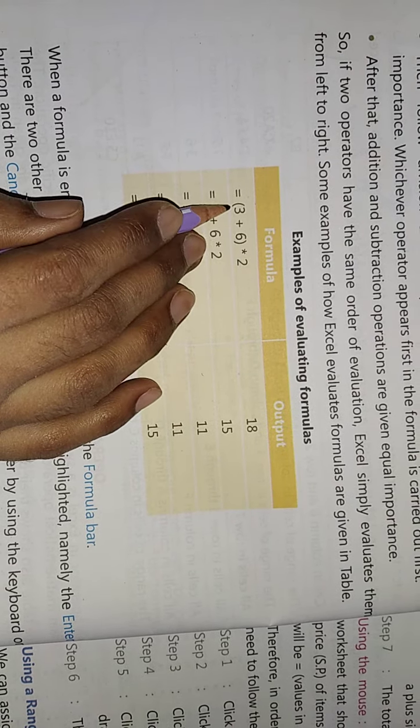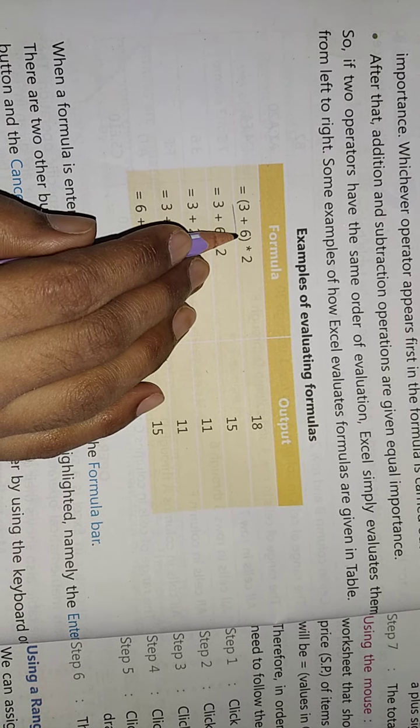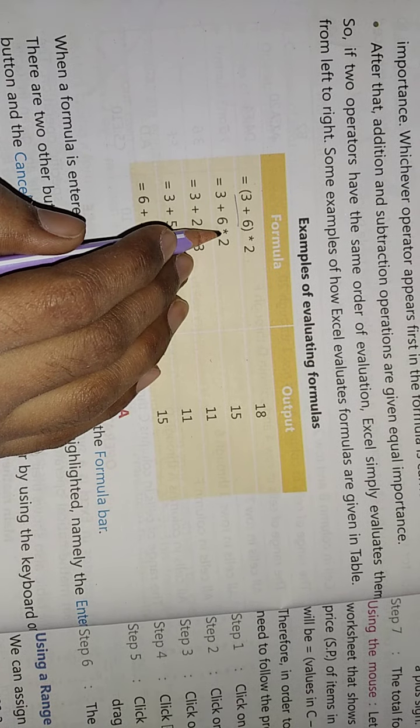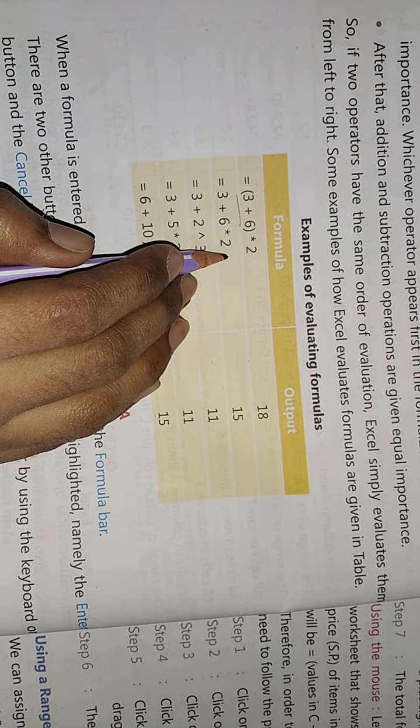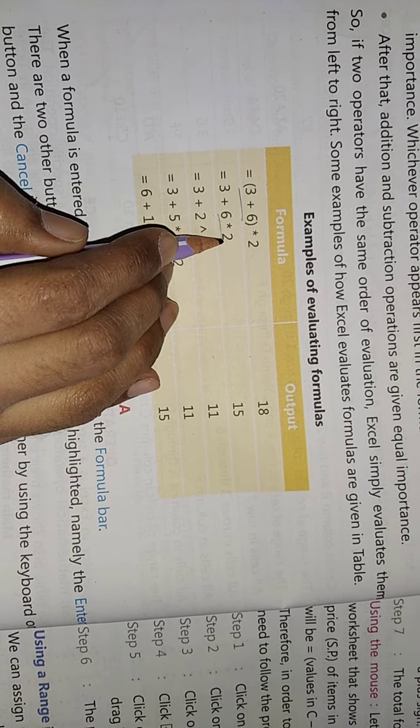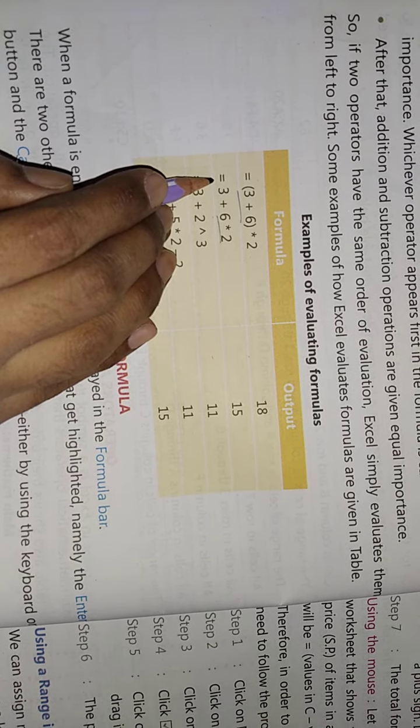See, 3 plus 6 in brackets, first of all we have to solve it. How much is 3 plus 6? 9. 9 into 2 is 18. Now for 3 plus 6 into 2 without brackets, we have to do multiplication in the second order. So 6 times 2 is 12, then 3 plus 12 is 15.